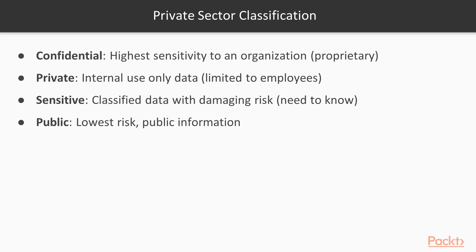Let's take a look at the private sector classification. At the highest sensitivity to an organization is Confidential, which covers proprietary information — what makes your company the best at what it does, its so-called secret sauce, patents, and things like that. Next down from that is the Private classification. This is internal-use-only data limited to employees only. It's internal data, not necessarily confidential, but it could still be damaging to a company's reputation if it were to get into the hands of the public.